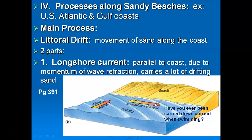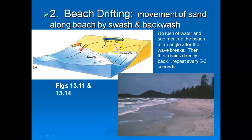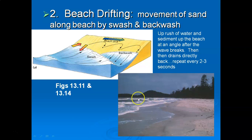The second component is sand movement on the beach itself, called beach drifting — the movement of sand along the beach by the processes of swash and backwash. After a wave breaks, a sheet of water and sand moves up the beach at an angle matching the refracted wave. Then there's an immediate backwash moving directly back down, but two or three seconds later another breaking wave and swash interrupts the backwash and carries sand grains down-drift. Here we see individual sand grains moving in the same direction as the longshore current, with breaking waves and swash and backwash producing beach drifting.